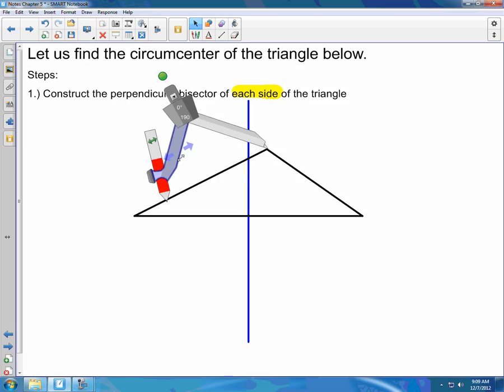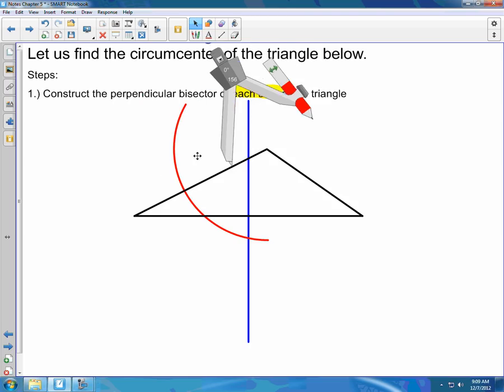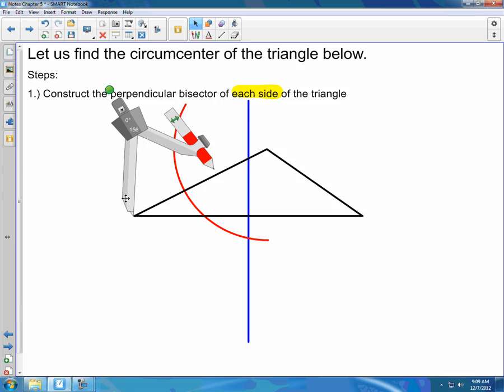Again, make sure that your compass opens over half. You're going to draw an arc above and below. Go to the other end point of the side. Don't change the opening. And again, repeat. Above and below.